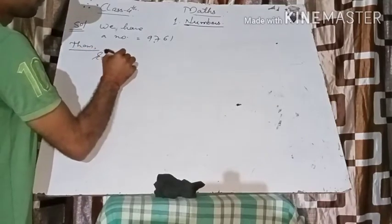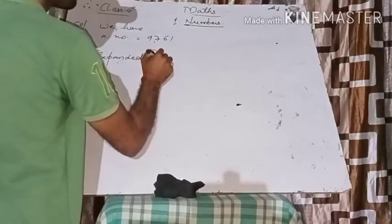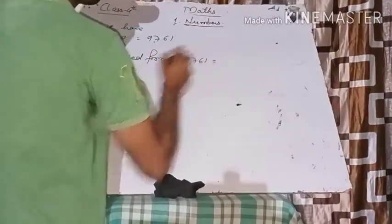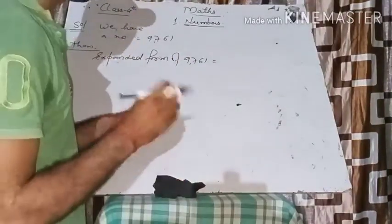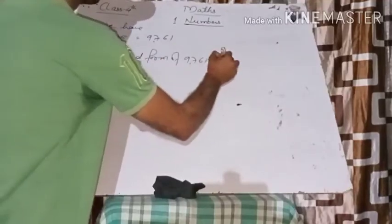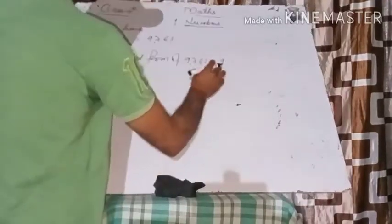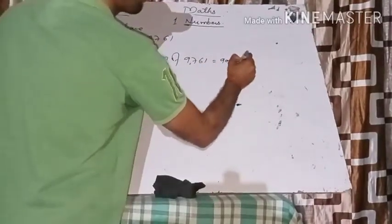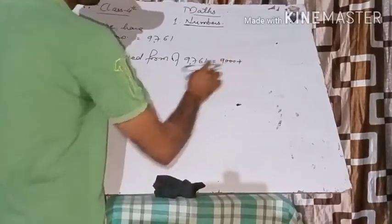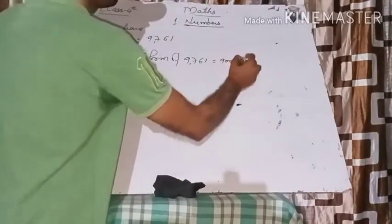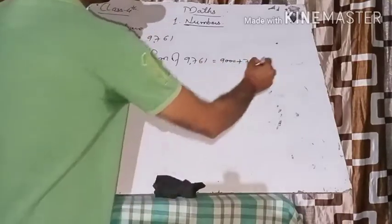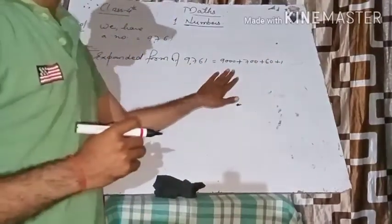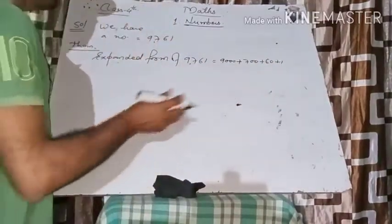The expanded form of 9761 is written as: 9000 + 700 + 60 + 1. We write each digit separately according to its position. So 9 is in thousands place giving 9000, then plus 700, then plus 60, then plus 1. That is your expanded form.